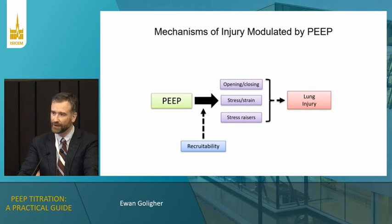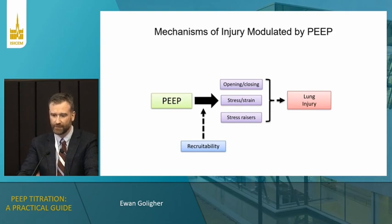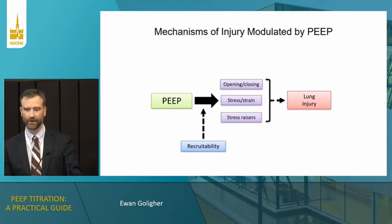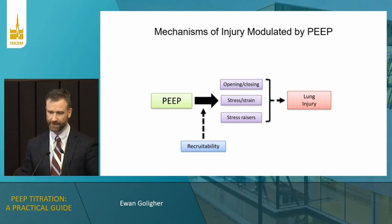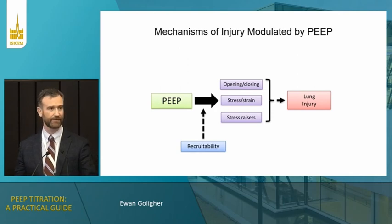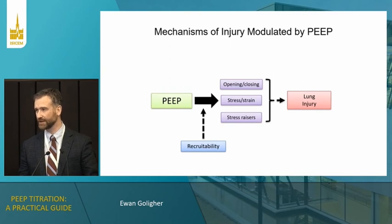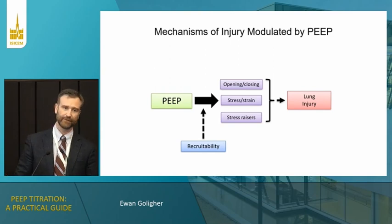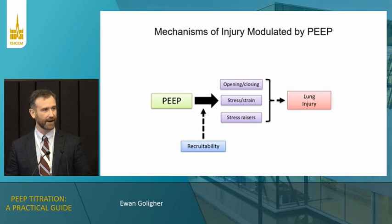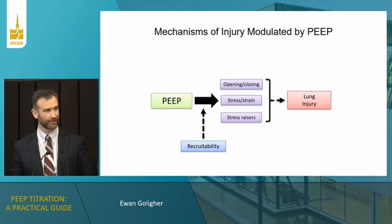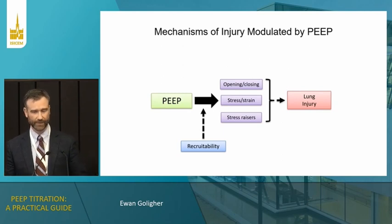There's been a huge amount of time and effort invested in thinking about how to apply PEEP to protect the lung. When we think about lung protection with PEEP, there are probably three theoretical mechanisms of lung injury to bear in mind. The first is opening and closing of atelectatic lung regions — so-called atelectrauma — the idea being that cyclic repetitive opening and closing of lung units adjacent to the border of the baby lung results in very high shear stresses. By increasing pressure at end expiration, we prevent airways from collapsing and prevent propagation of injury.